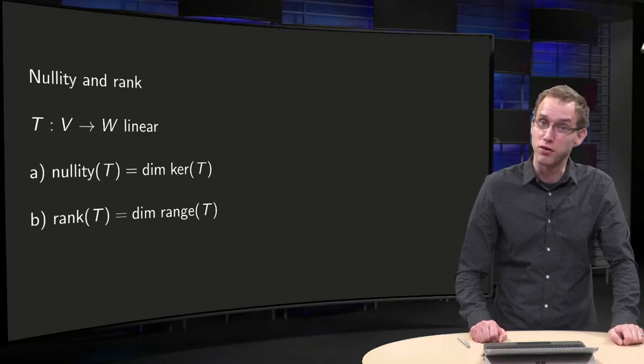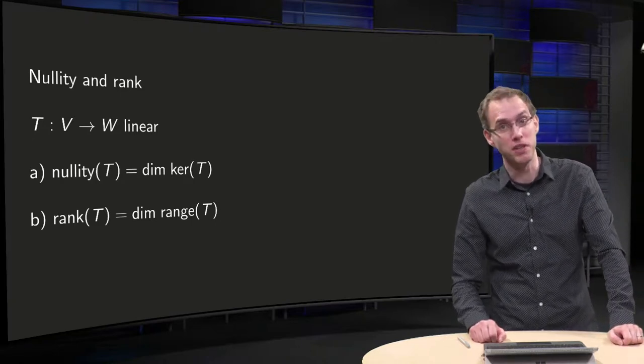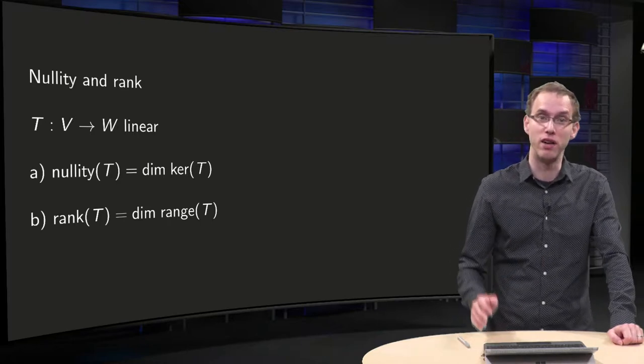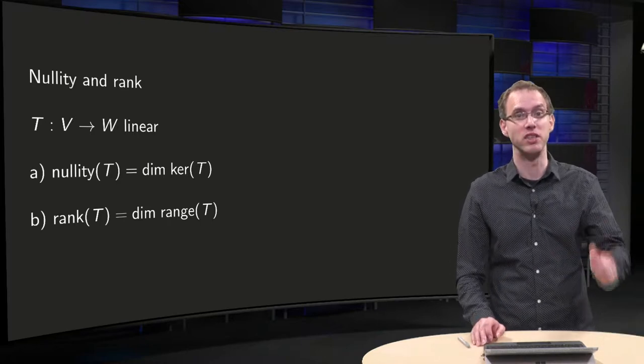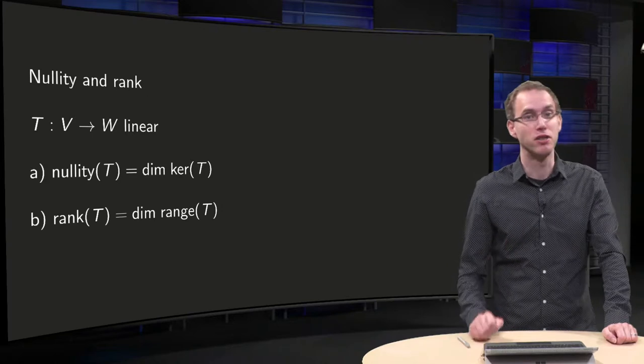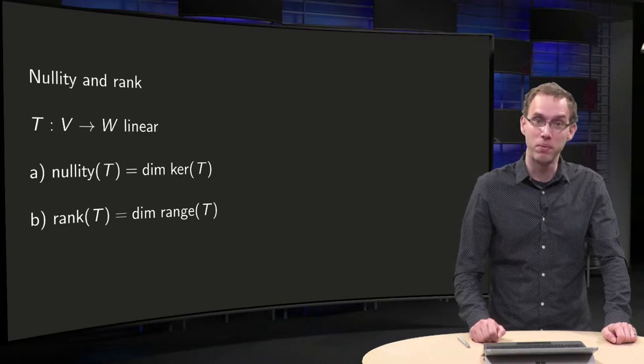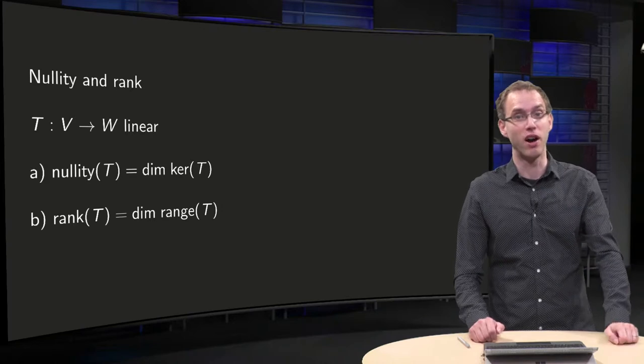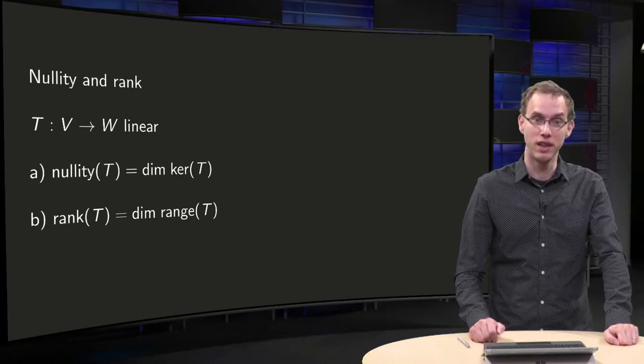The kernel and range of a linear transformation are subspaces. Subspaces are vector spaces, which means that they have a basis and also a dimension. The dimensions of the kernel and range of a linear transformation have gotten their own name. You will learn what these names are and how to compute them in this video.